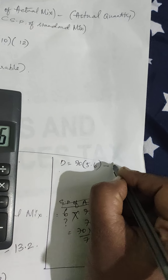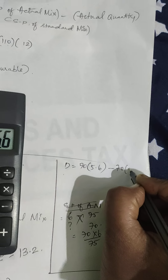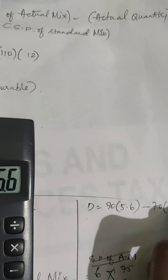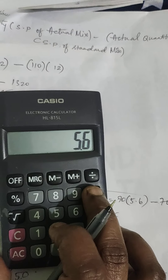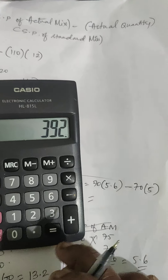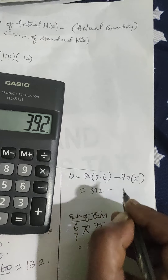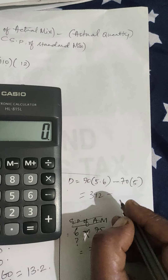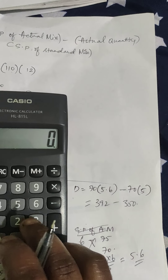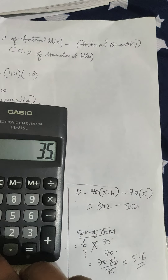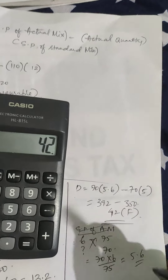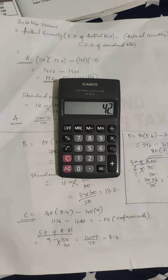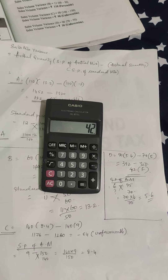For Product D: 70 × 5.6 = 392, minus 70 × 5 (standard price of standard mix) = 350. Therefore 392 − 350 = 42, which is a positive answer — a favorable situation. I hope you understood how to calculate sales mix variance. Thank you, everyone.